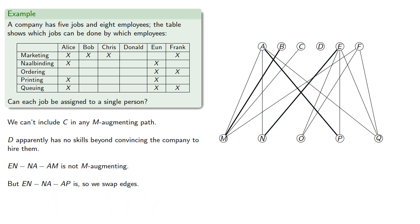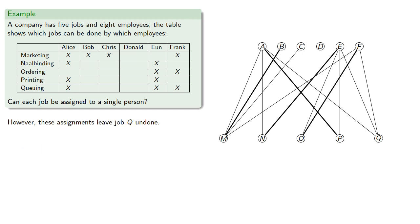FO is an edge not in our matching, so we include it. However we've run out of employees and these assignments leave Q undone.